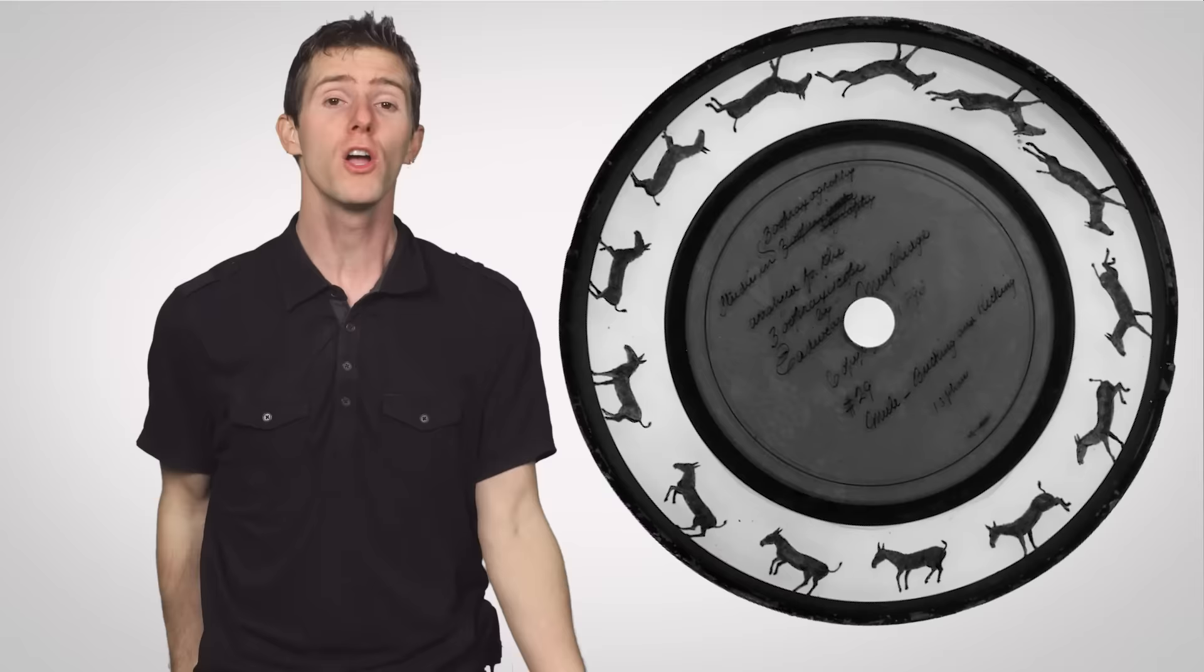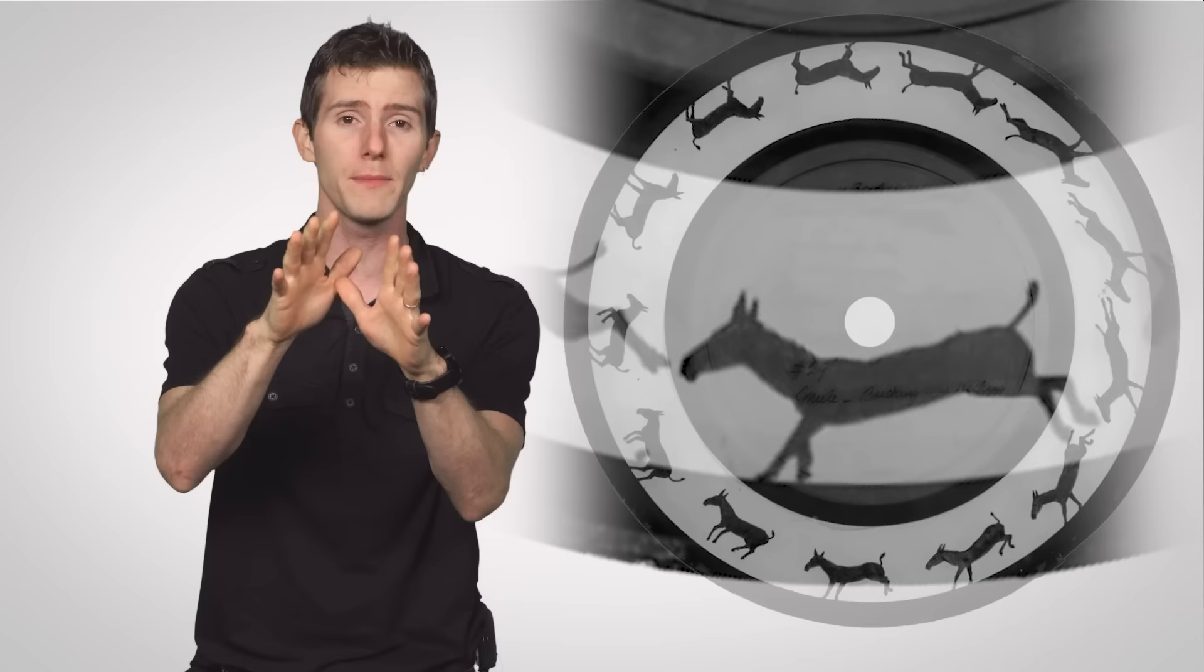Muybridge went on to take more than 100,000 photographs of people and animals in motion, which he displayed in books and lectures, and he even invented a device called a zoopraxiscope that projected these images rapidly in sequence onto a screen, making the zoopraxiscope effectively the very first animated GIF projector.